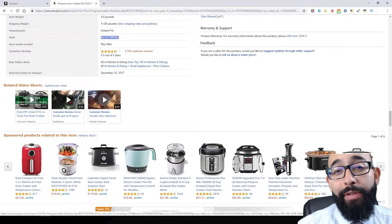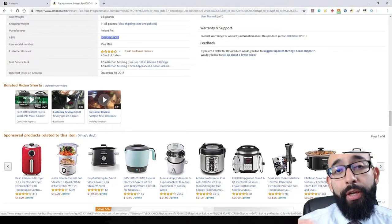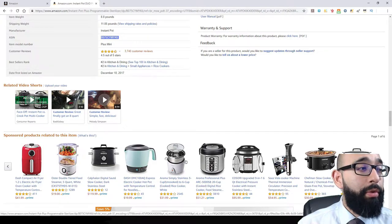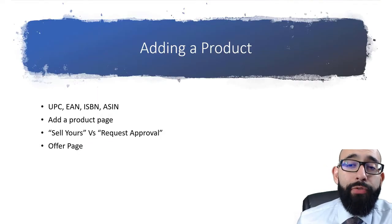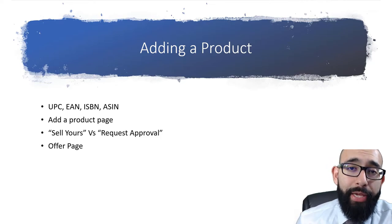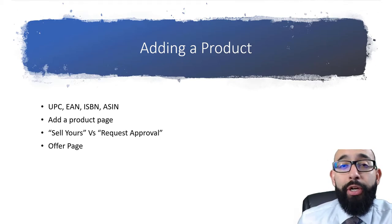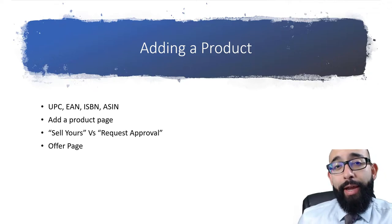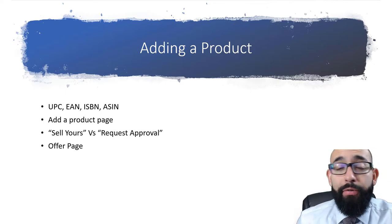If this is a product you're selling, go ahead and copy the ASIN number, then search it and add it to your inventory. There are a couple of different ways to add a product — you can identify it by the UPC, the EAN, the ISBN number, or the ASIN number, which I just showed you how to get.